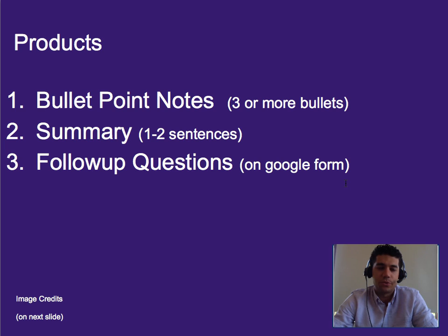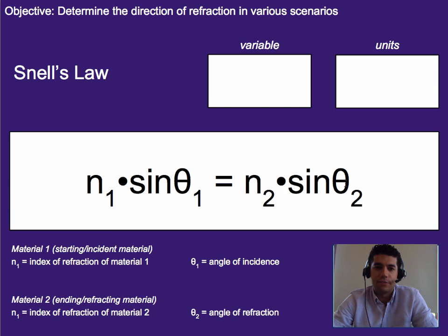That's it for this one. Three more bullet points worth of notes, a one to two sentence summary and your follow-up questions on Google Forms. If Snell's law is a little confusing to you don't worry about it too much. We're not going to focus very heavily on this for this unit. But give it a shot because it may show up briefly on a test to check for people who have a higher level mastery of information.